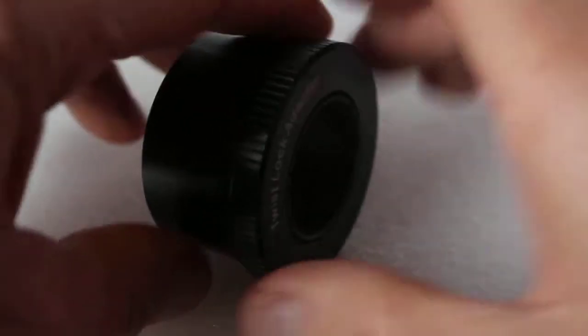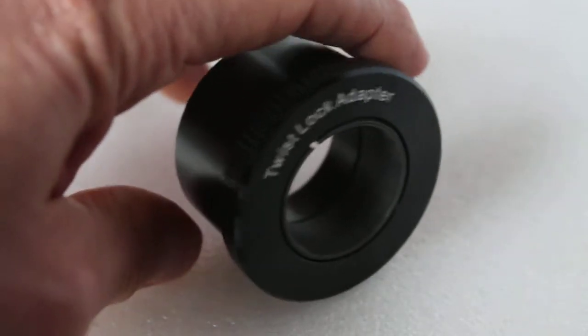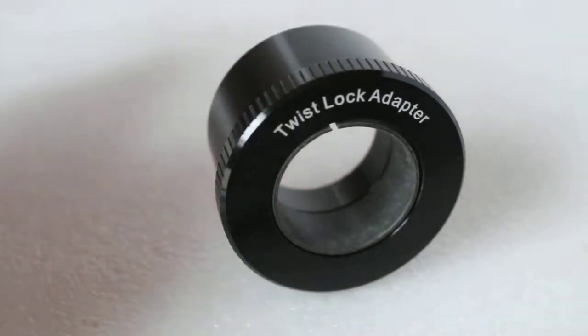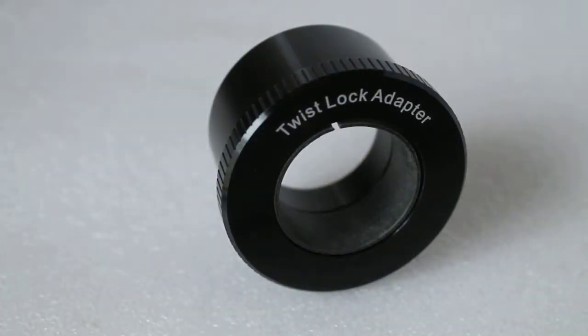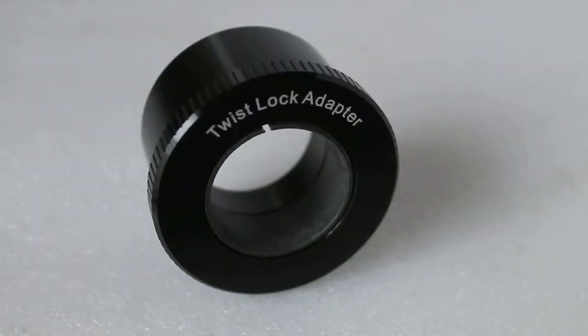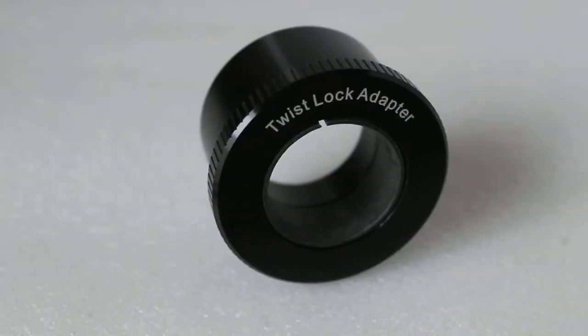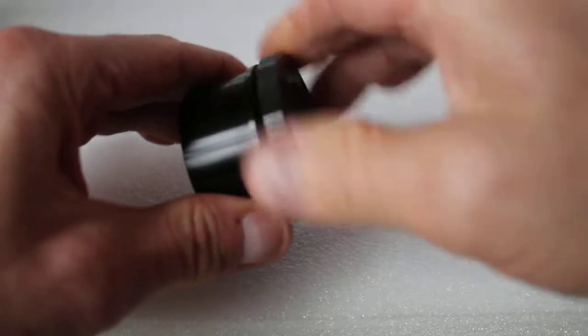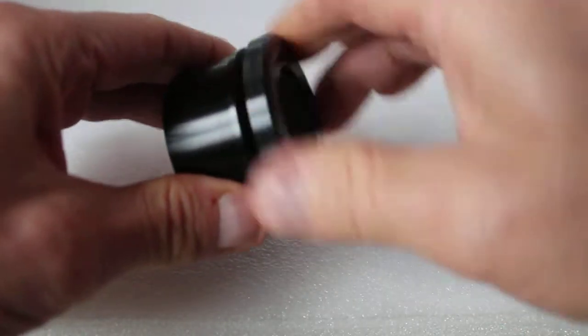As the title suggests, it is a twist lock adapter and is self-centering, which is very important if using, in this case, with a collimating eyepiece. In order to insert, in this case, a Cheshire collimator...